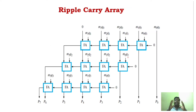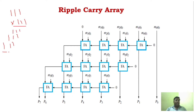Carry save addition is used in multiplication. In normal multiplication, when you multiply two numbers, you get partial products and you have to add all of them. If you implement this multiplier using a ripple carry adder, the carry will propagate from one adder to the other, causing significant delay.